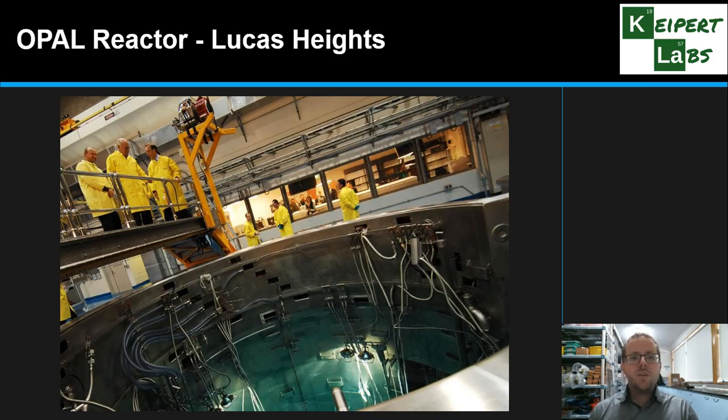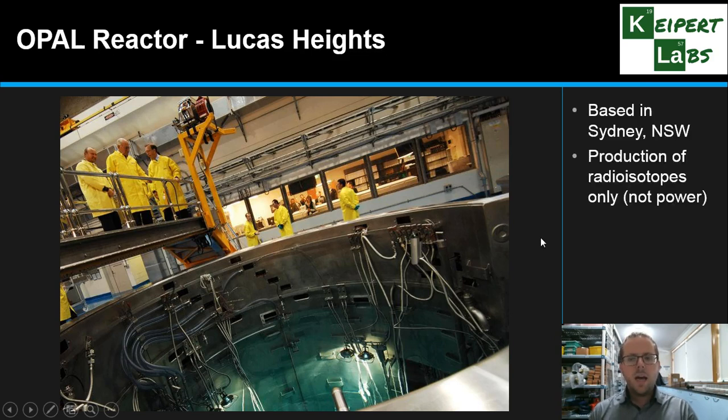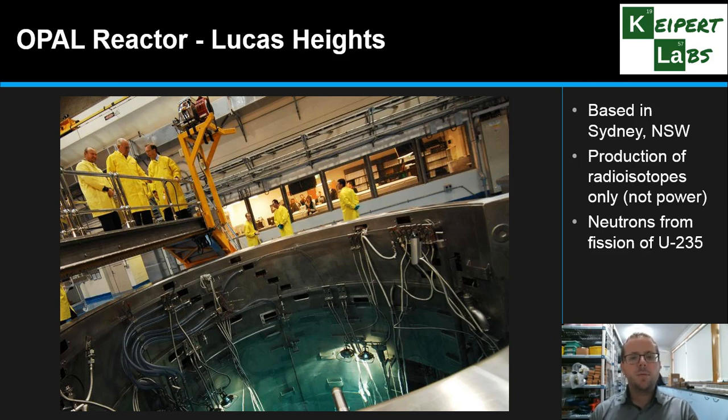So one such facility that we can use here in Australia or in Sydney more particularly is called the Opal Reactor, which is in Lucas Heights. So here you can see looking down into the water-cooled core. So the fuel rods are kind of just down below here. You can see them. So it's a nuclear reactor, but it's only for the production of radioisotopes. It's not for nuclear power. It is only designed to actually produce these sorts of things. So it still contains fuel rods, but using the neutrons for producing substances like technetium-99, and using the fission of uranium-235 as a source of neutrons for what we need.